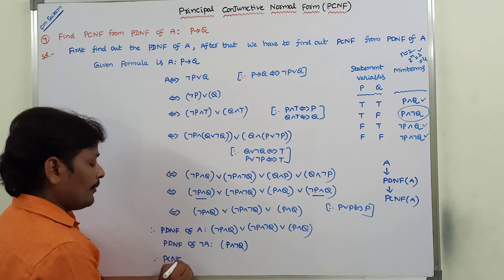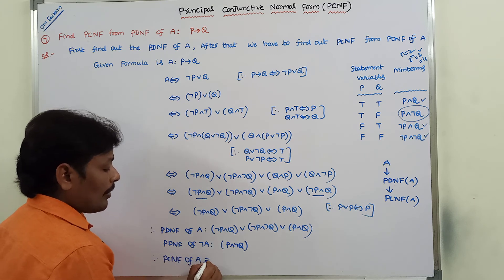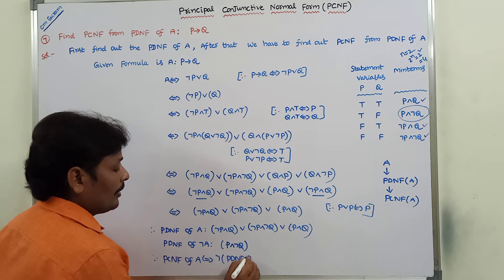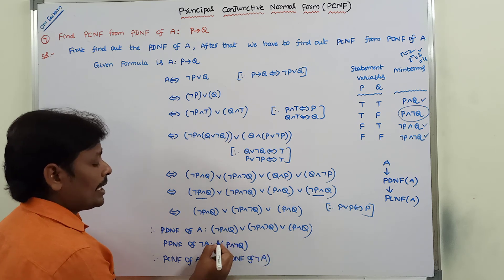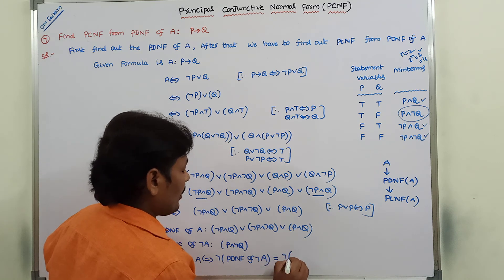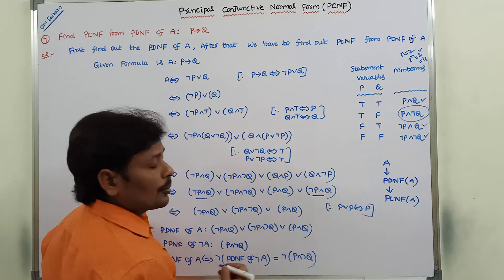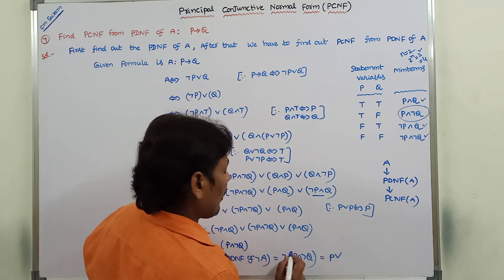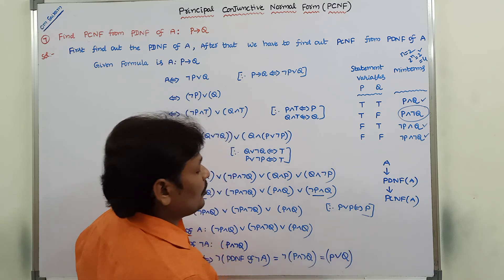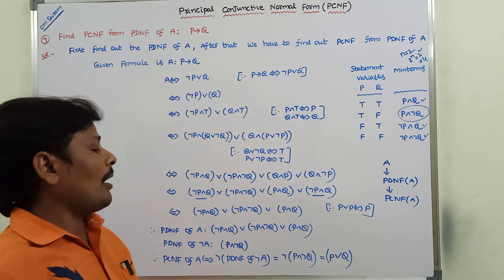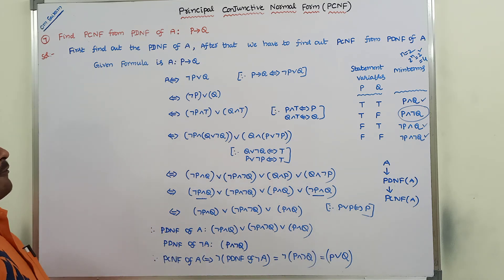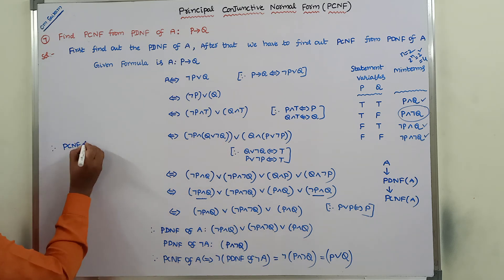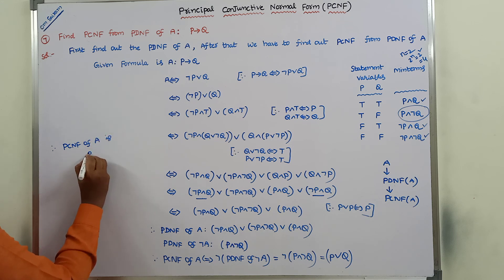Finally, PCNF of A is logically equivalent to the negation of PDNF of negation A. So we take negation of (P ∧ negation Q). Applying De Morgan's law: negation of P becomes negation P, negation of ∧ becomes ∨, and negation of negation Q becomes Q. Therefore, PCNF of A = negation P ∨ Q, which is P ∨ Q — written as P ∨ Q.